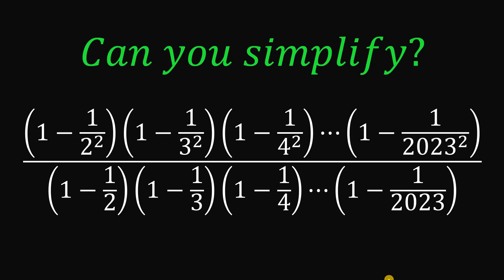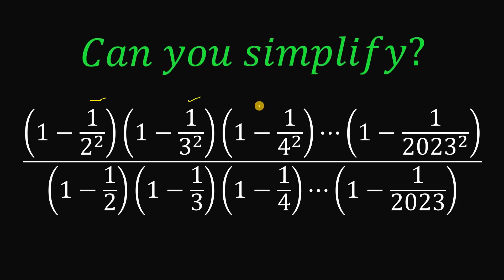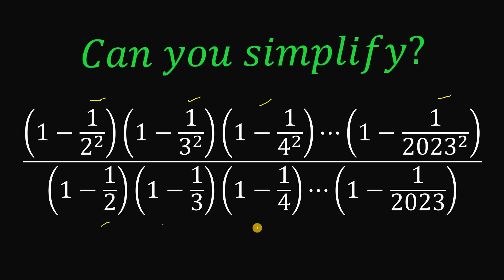Can you simplify this expression? Here's the question. Can you simplify 1 minus 1 over 2 squared, multiplied by 1 minus 1 over 3 squared, multiplied by 1 minus 1 over 4 squared, all the way up to 1 minus 1 over 2023 squared, all over 1 minus 1 half, multiplied by 1 minus 1 third, multiplied by 1 minus 1 fourth, all the way to 1 minus 1 over 2023.